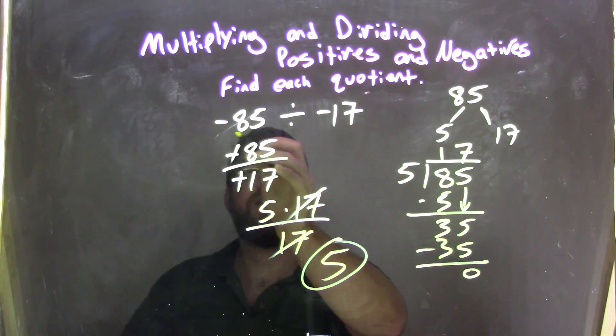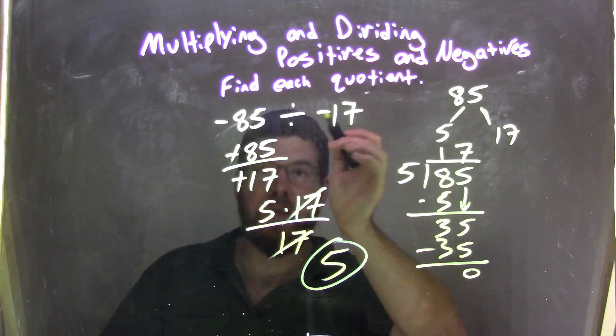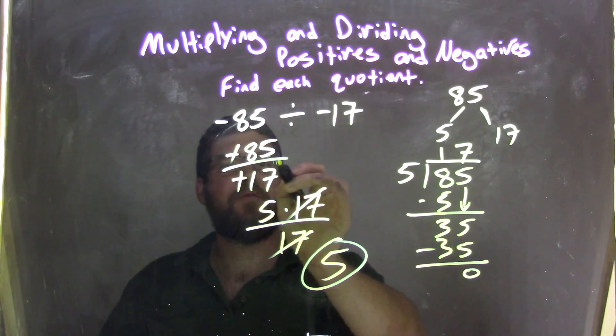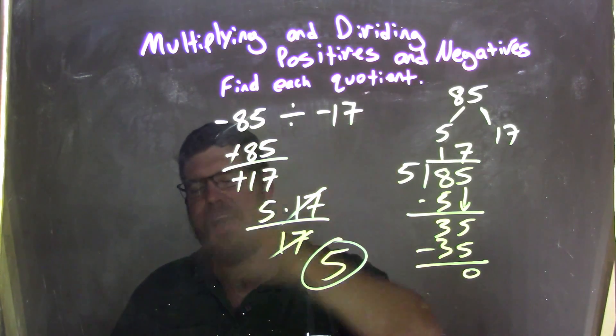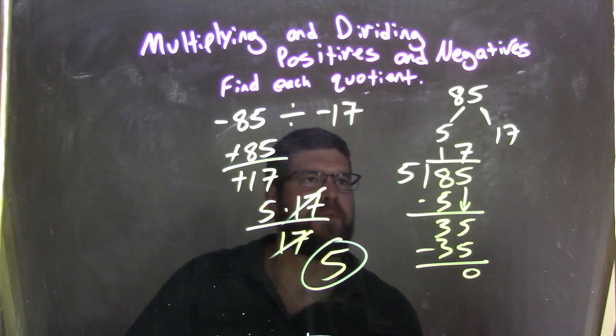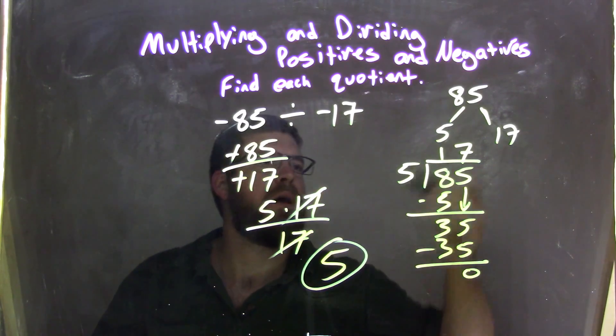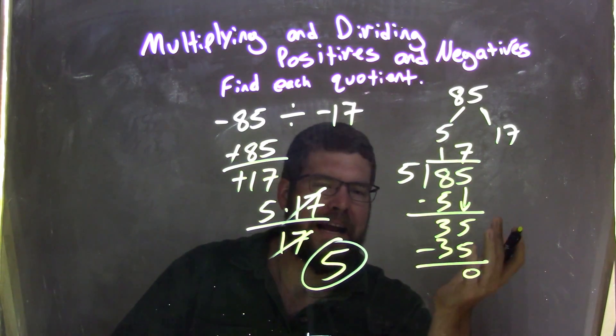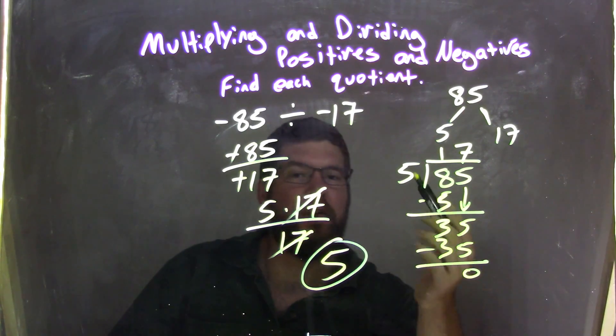So again, let's recap. We have negative 85 divided by negative 17. I rewrote it as a fraction, and then I solved both negatives, canceled them out because I don't like them, made them all positive. If I see two negatives and then division, cancel. So I know 5 had to go into 85, so I figured that out using long division. 5 into 85.